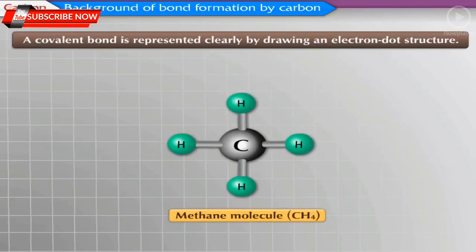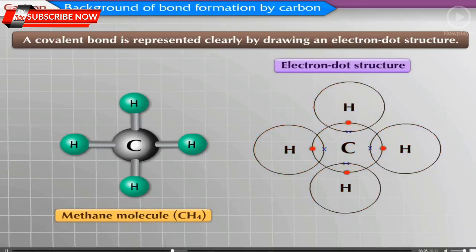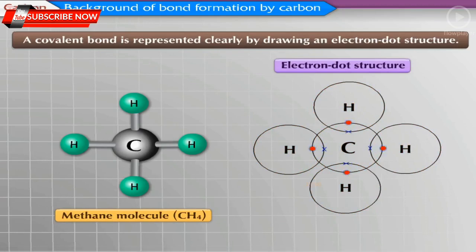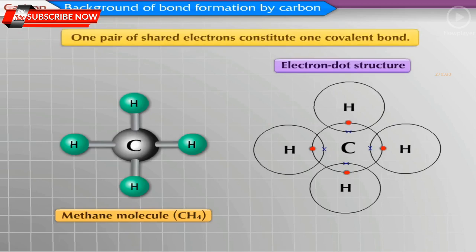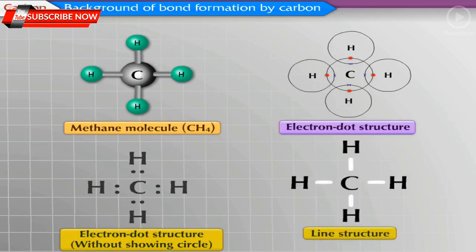A covalent bond is clearly represented by drawing an electron dot structure. In this method, a circle is drawn around the atomic symbol and each valence electron is indicated by a dot or cross. The covalent bond between atoms is shown by overlapping circles, with shared electrons in the overlapping region. One pair of shared electrons constitutes one covalent bond. A covalent bond is also represented by a small line joining the symbols of two atoms, called the structural formula or line structure.